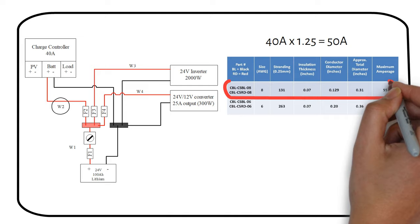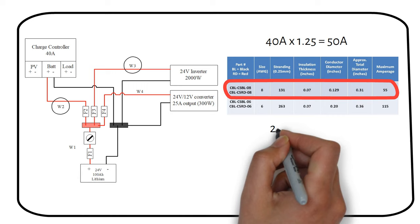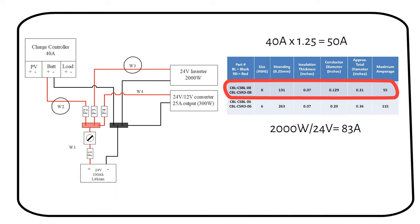Next up is the wire to the inverter. The maximum power this wire carries is 2000 watts. We divide this by the battery voltage to get 83 amps. We then multiply by the safety factor to become 16 amps.